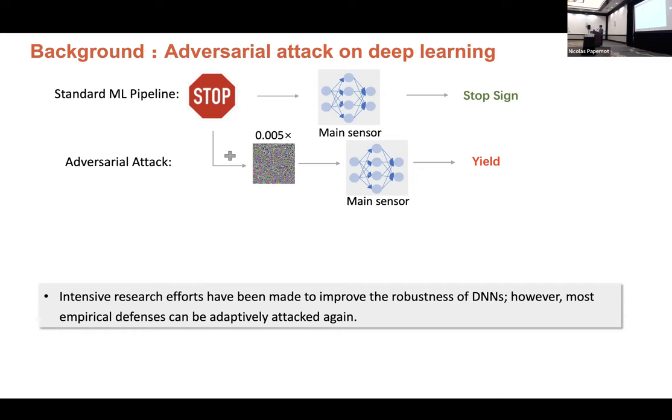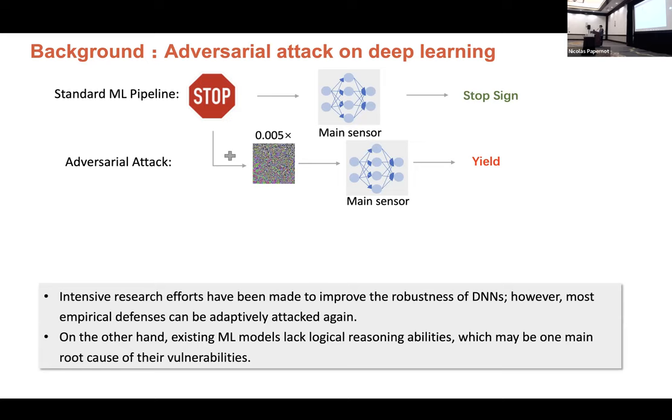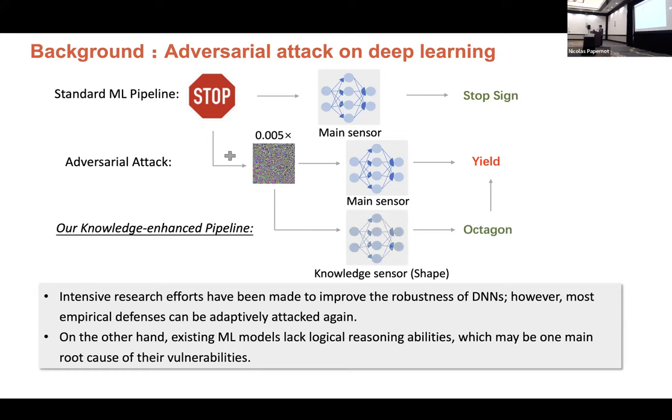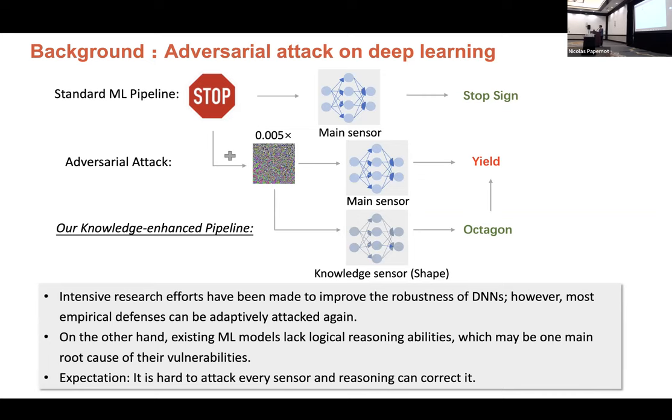And to our intuition, we guess one major cause of this vulnerability is that existing machine learning models lack some logical reasoning abilities. So if we can train another knowledge sensor like for detecting the shape, and we expect it to predict well, and then we can use additional information like the shape octagon here to correct the misclassified prediction. And the idea is that we can train multiple such knowledge sensors and collect all these information and do some reasoning based on this information. And finally, we can make it be corrected.